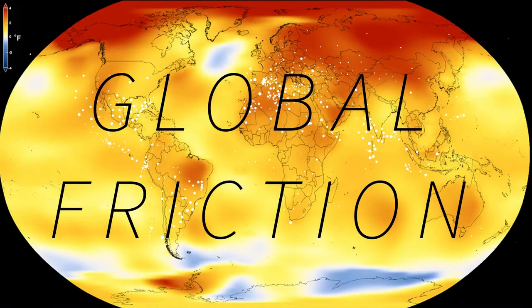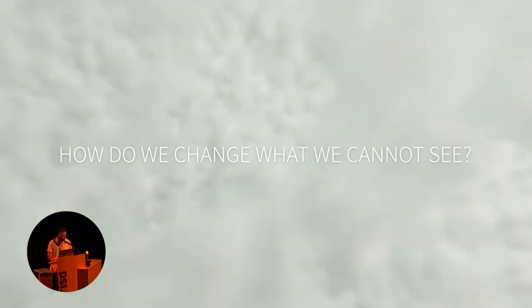For years now, climate change has been an aesthetically increasing global crisis, yet we do not experience it globally at the same time. We have yet to acknowledge it and to address it as global friction. Both our warming planet and the virus are invisible to us - their scales are either too big or too small for us to see with our naked eyes. How can we identify possibility for action in the environment? How can we change what we can't see?